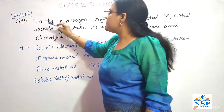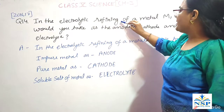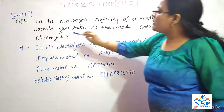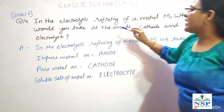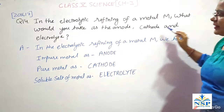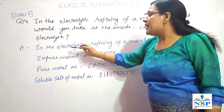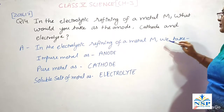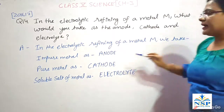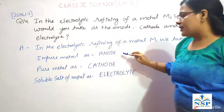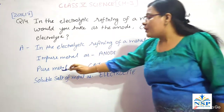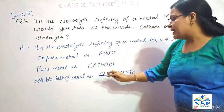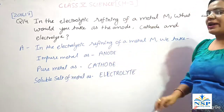Our next question: in the electrolytic refining of a metal M, what would you take as anode, cathode, and electrolyte? In the electrolytic refining of a metal M, we take impure metal as anode, pure metal as cathode, and a soluble salt of the metal as electrolyte.